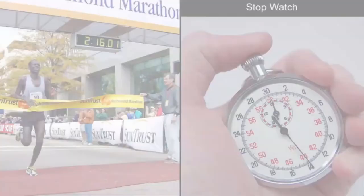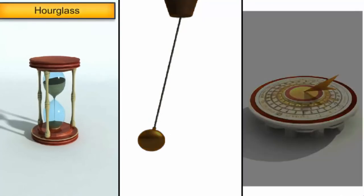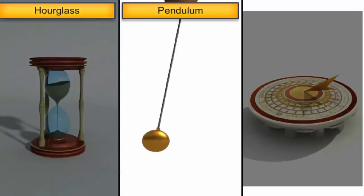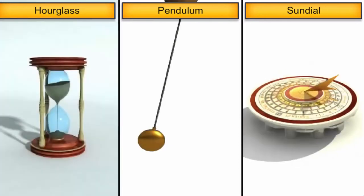There were so many kinds of time measuring devices used in the past, ranging from hourglasses, pendulums, sundials, etc., which measure time based on different phenomena.